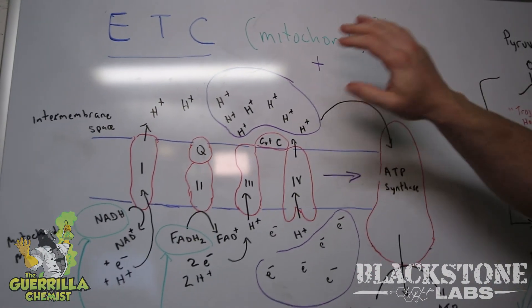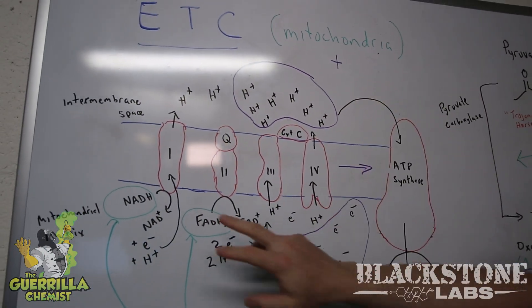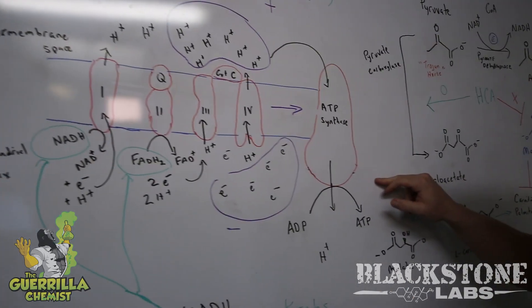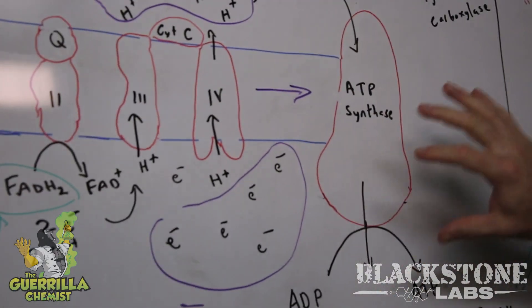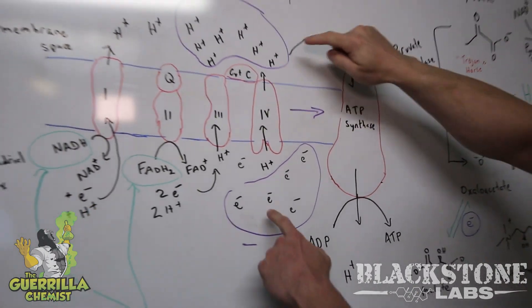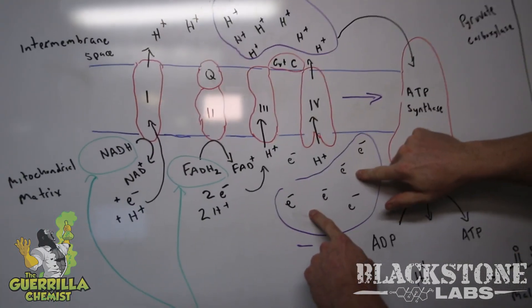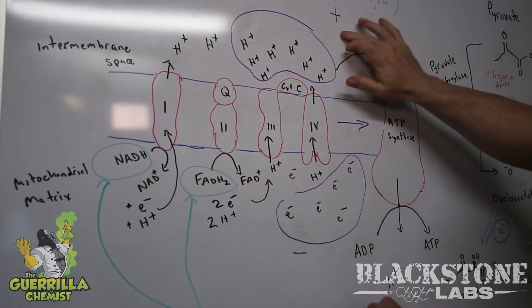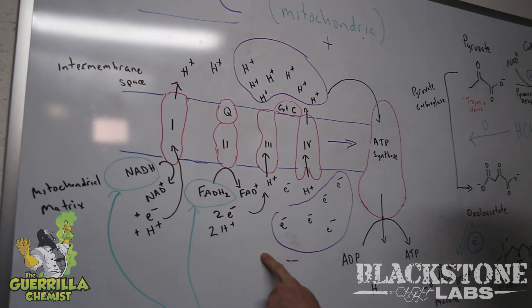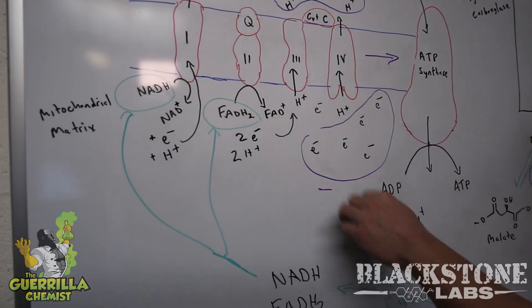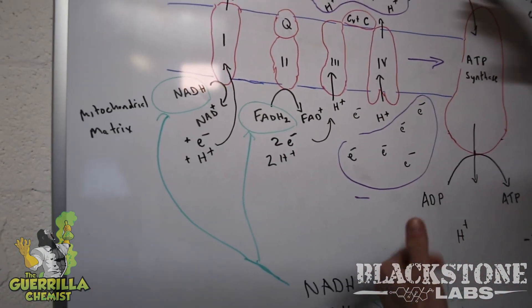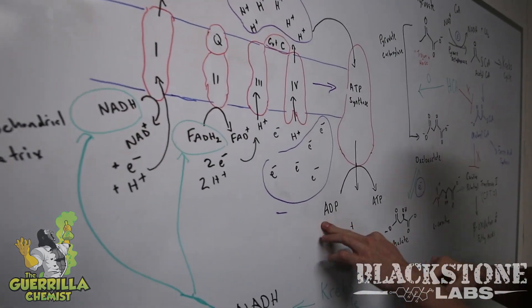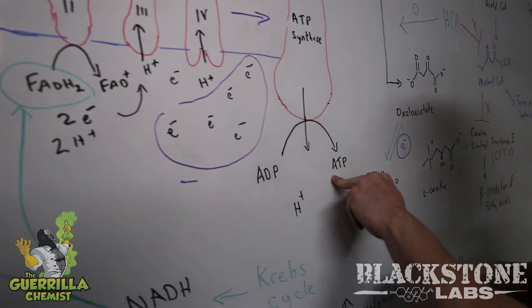This is the electron transport chain. This is how our body makes ATP, which is our energy source. This only works because of this positive and negative charge on the sides of the membrane. On the inner membrane space we have a positive charge, and in the mitochondrial matrix we have a negative charge. This electrochemical gradient is the force that drives ATP synthase to turn ADP into ATP.